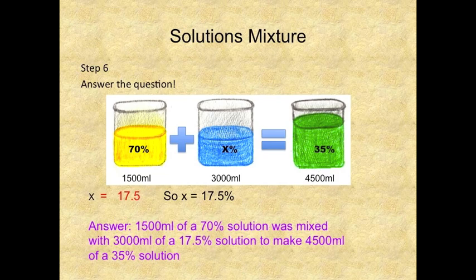Step 6. Answer the question. So if x is equal to 17.5, this means that x is equal to 17.5%. So your answer is 1,500 ml of a 70% solution was mixed with 3,000 ml of a 17.5% solution to make 4,500 ml of a 35% solution.